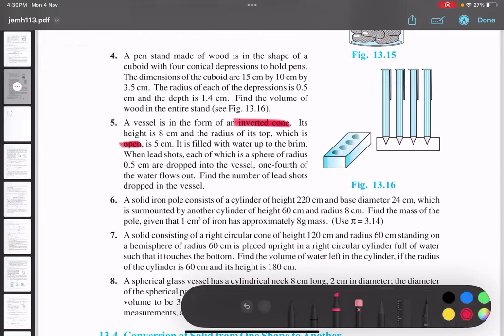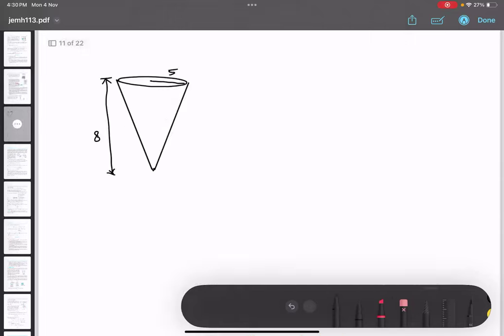It is filled with water to the brim. What do you mean by the word brim? Do you understand the word brim? To the top. This is called the brim. That means it is fully filled. If you fill one drop more, it will fall. Got it?